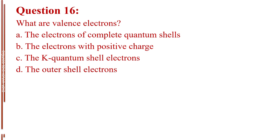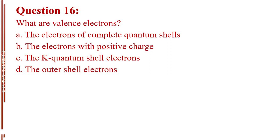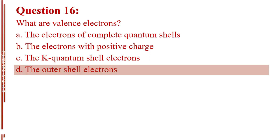Question number 16. What are valence electrons? Letter A, the electrons of complete quantum shells. Letter B, the electrons with positive charge. Letter C, the k-quantum shell electrons. Letter D, the outer shell electrons. The answer is Letter D, the outer shell electrons.